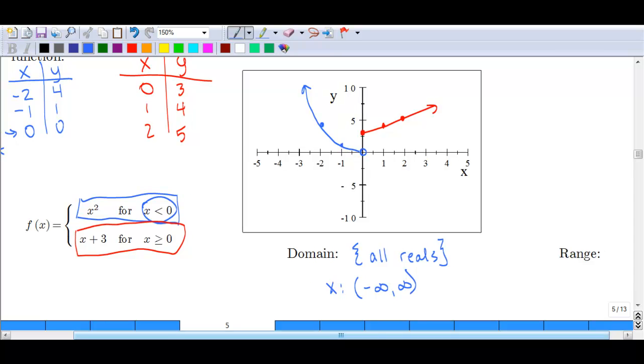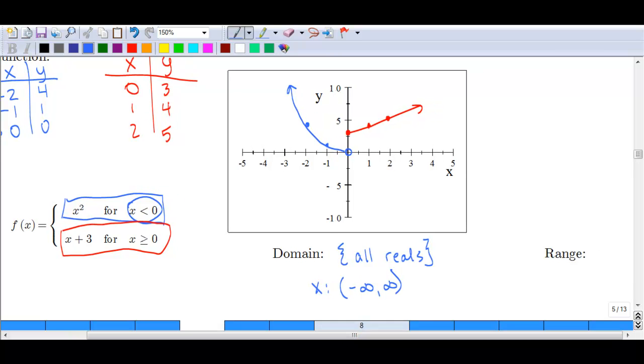If we look at the range, we definitely need the graph for the range in this case. The range are the y values, the up and down values. So if you notice here, we don't have any negative values. We also don't have the value at y equals 0 because it's an open dot.